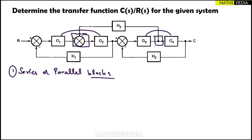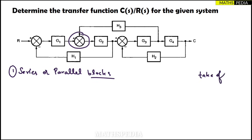To make those blocks series, I have to shift that takeoff point and summing point. As mentioned in previous videos, always try to shift the takeoff point towards the right side — towards the output — and the summing point towards the left side — towards the input. The summing point is here, so I'll shift it to the left side, and the takeoff point I'll shift to the output side. Let me draw that first.